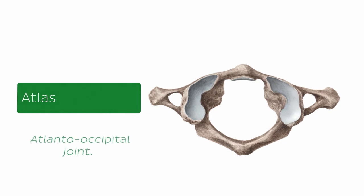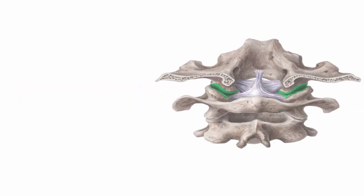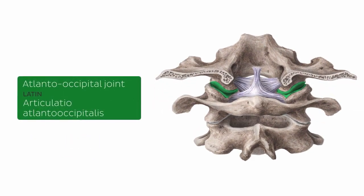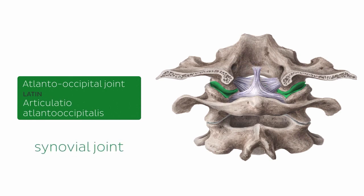The atlantooccipital joint is seen here highlighted in green, and is formed between the atlas — the first cervical vertebra — and the occipital condyles found at the base of the skull on the occipital bone. This joint is a movable joint, better known as a synovial joint.